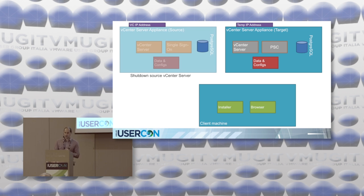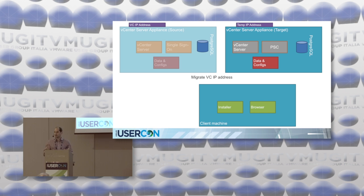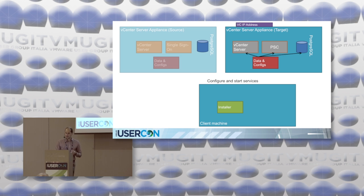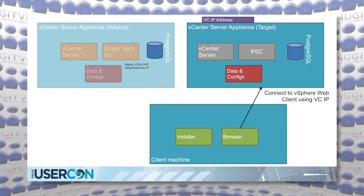Then we shut down the source vCenter Server to preserve the networking. We preserve the IP addresses, masks, DNS, gateways — the entire networking identity of the source vCenter Server. The temporary IP address is then disposed; you can reuse it for upgrading the next vCenter Server. We then configure and start the target vCSA services, and you can point your browser to the same IP address and browse the web client to validate that the entire inventory and all data you're interested in is there.